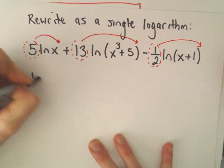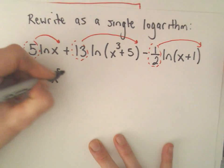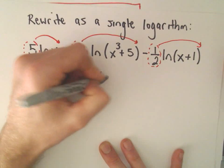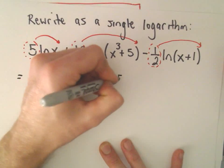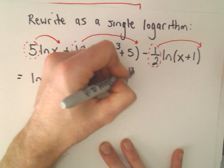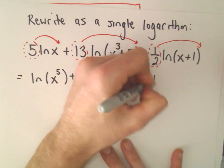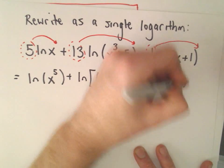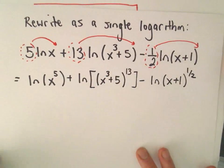So we could write our first term as ln of x raised to the 5th power. We could write our next term as the natural logarithm of x cubed plus 5 raised to the 13th power. And then we would have minus the natural logarithm of x plus 1 raised to the 1 half power.